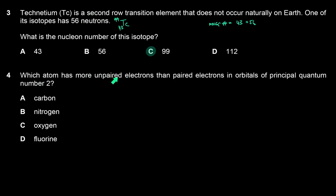Which atom has more unpaired electrons than paired electrons in orbitals of principal quantum number two? Carbon ends with 2s² 2p². In the second shell, carbon has two paired electrons in the 2s orbital and two unpaired electrons in the 2p orbital — equal numbers. Nitrogen is 2s² 2p³, group 15, five outer electrons. It has three unpaired electrons and just two paired electrons. So the answer is B — nitrogen has more unpaired than paired electrons.